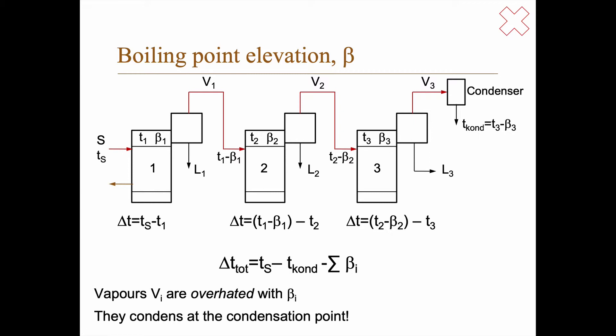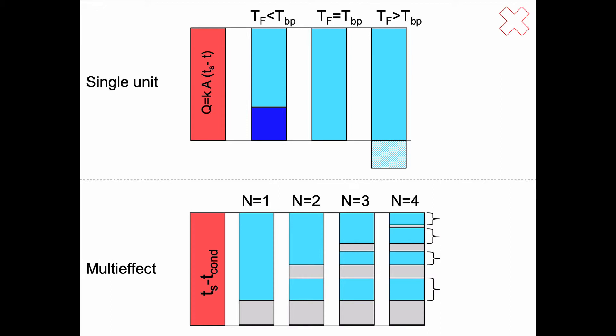So this limits what you can do. To understand how this limit works, let's think back of the rule of thumb we had with what the limit is for the steam economy. Let's start with a single unit and let's think of the driving force as the heat is being transferred. Q equals K times A times TS minus T. What is that energy used for? So TS minus T is the driving force and this is the entire energy and it's used for something.